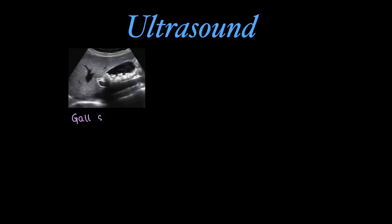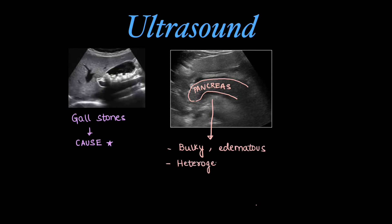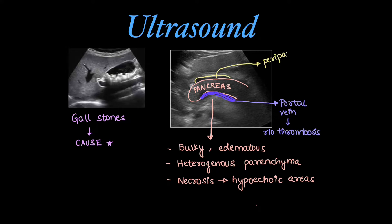Ultrasound is an important primary modality of choice. We can easily visualize gallstones, which are a cause of acute pancreatitis. The pancreas will be bulky and edematous and can show heterogeneously hypoechoic parenchyma. Necrotic areas can be seen as ill-defined hypoechoic areas. Posterior to the pancreas we can see the splenic vein and assess for portal vein thrombosis using Doppler. We can also see peripancreatic fluid collection.